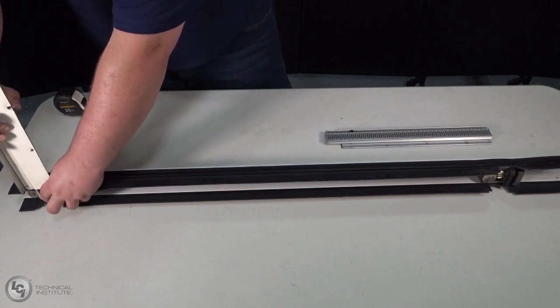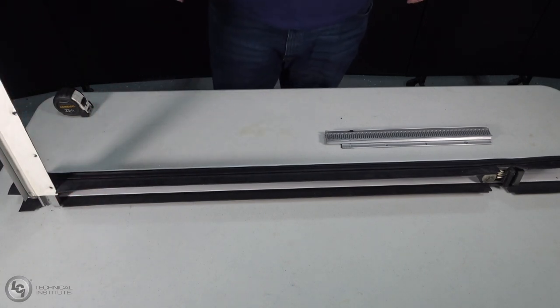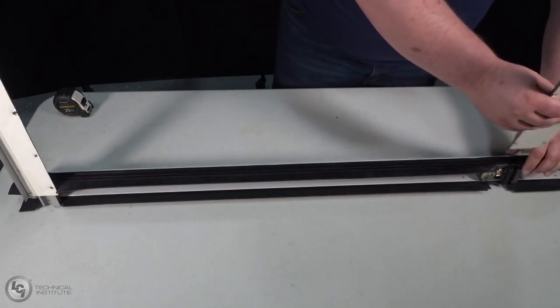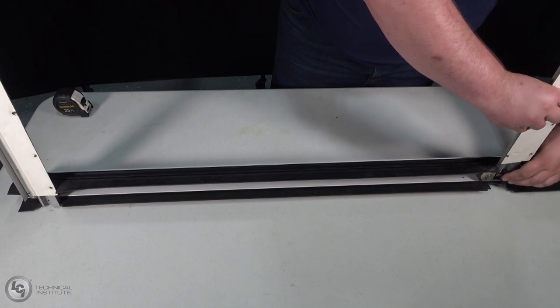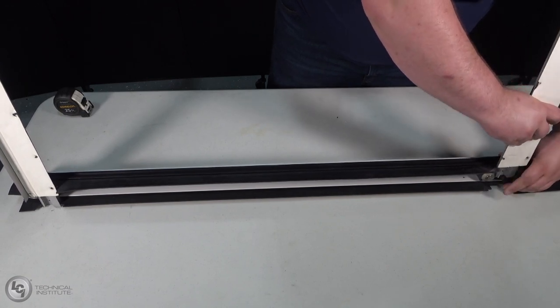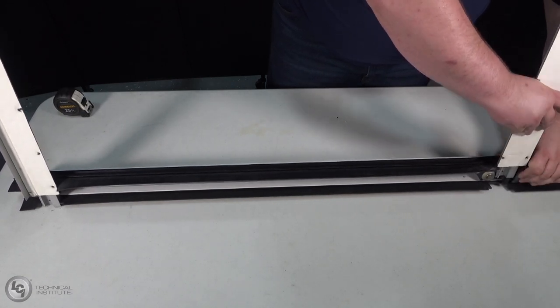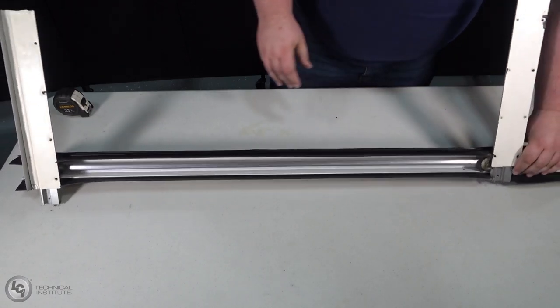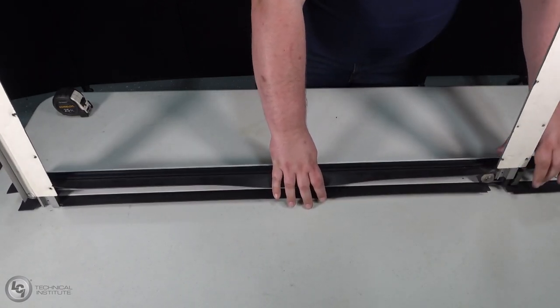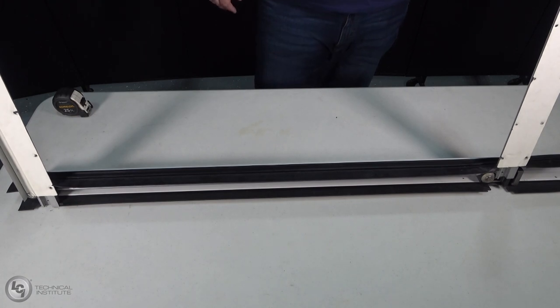We will start timing by inserting the bottom gear rack first. You can identify this gear rack by the flange on the bottom side. Insert the gear rack fully into the column. Next, install the top gear rack into the column. You will notice that if you try to push it through, the gear racks do not line up.